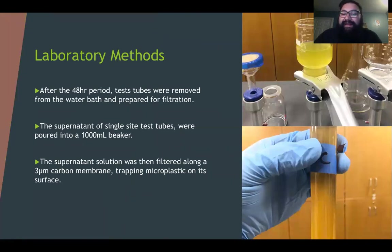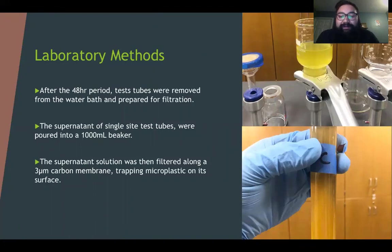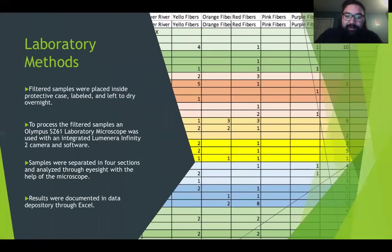Once the test tubes had reacted at the end of the 48-hour period, they were removed from the water baths and prepared for filtration. This required the removal of foil paper from the test tube rims and for the remaining supernatant to be poured out into a 1,000 milliliter beaker. A powerful vacuum pump in the ESRM prep lab was used to filter out microplastics from the supernatant. The vacuum pump was fashioned with a series of ports where a polycarbonate filter membrane of 3 microns was placed. Above the filter port, an open-bottom glass beaker was clamped down and poured with the reactive supernatant. The pump was then turned on, forcing the supernatant to be filtered through the polycarbonate membrane, trapping the microplastics on the surface of the filter membrane. This was then stored inside a clear plastic case and allowed to dry overnight before analyzing under a microscope.